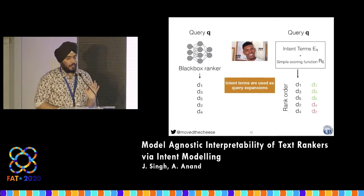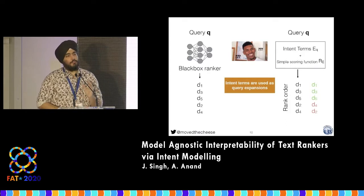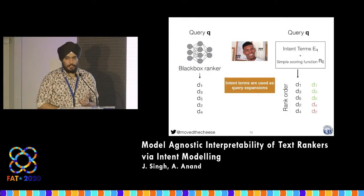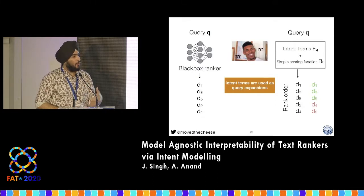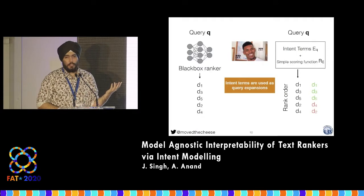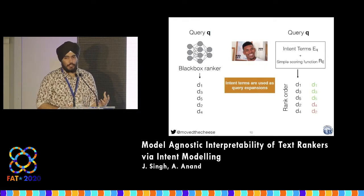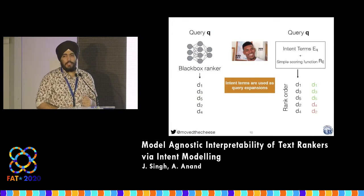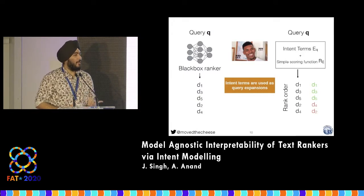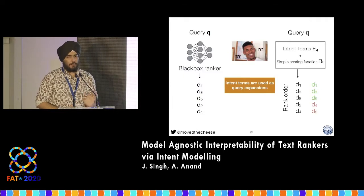Our approach is essentially this: we want to do local model agnostic interpretability for textual rankings. The locality for us is a single query — you're interested in explaining the results for a given query. You have a black box ranking model that gives you a ranked list output, and you ask why. The crux of our approach is quite simple: the query tends to be underspecified, so we find intent terms — basically query expansion terms — which specify the information need. Once you have a much larger information need, you can use very simple ranking models like TF-IDF, proximity, and position to estimate the ranking that the black box made. It's very much LIME-inspired.